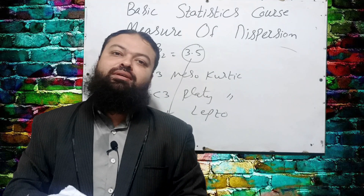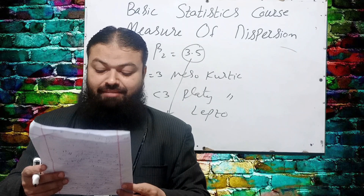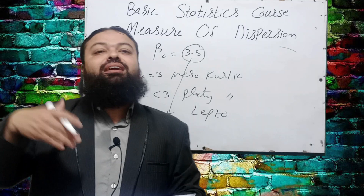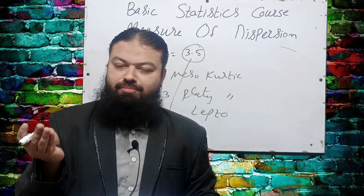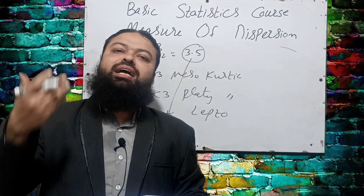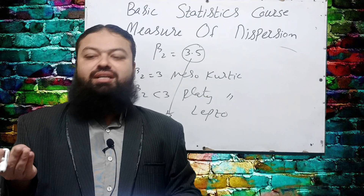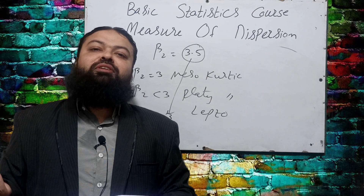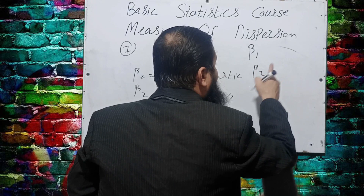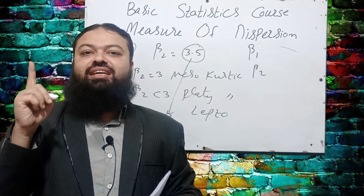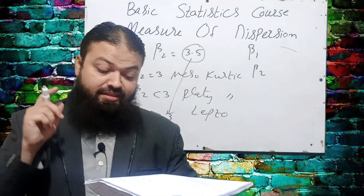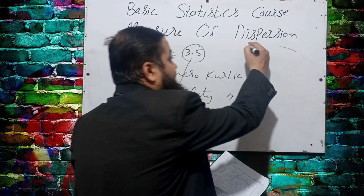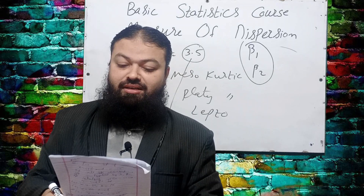Question number eight: β₁ (coefficient of skewness) and β₂ (coefficient of kurtosis) are independent of — in the last eight lectures we covered that arithmetic mean, geometric mean, and harmonic mean are affected by change of origin. Measures of dispersion are affected by change of scale. But β₁ and β₂ are independent of both change of origin and scale — they are not affected by adding, subtracting, multiplying, or dividing by any number. The correct option is 'change of origin and scale.'